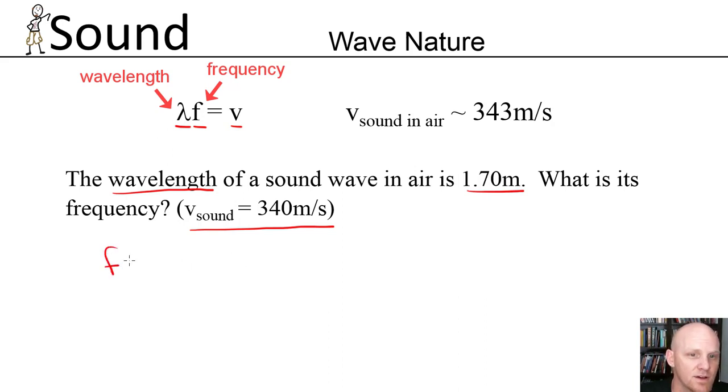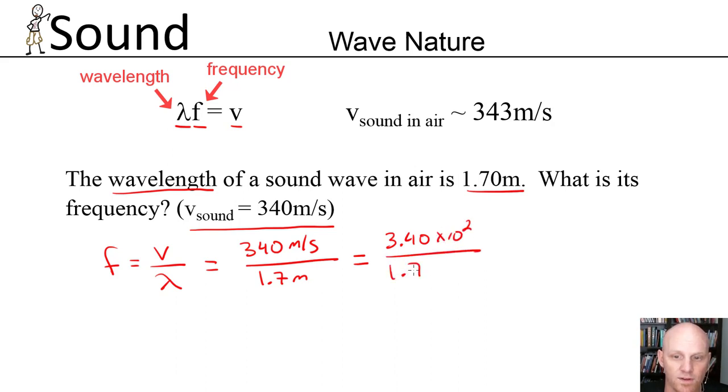So if we rearrange, we can see that the frequency is equal to the velocity of the wave over the wavelength. In this case, that's going to be 340 meters per second over a wavelength of 1.7 meters. So if we do the math here, 340 is the same as 3.4 times 10 to the second, all over 1.7.